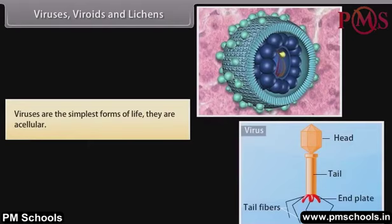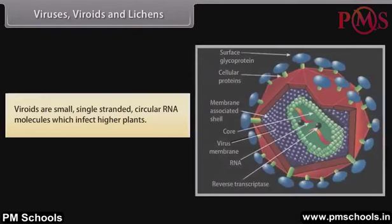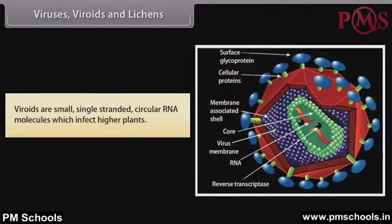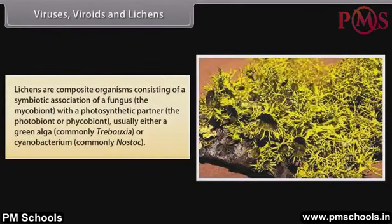Viruses are the simplest forms of life. Viroids are small single-stranded circular RNA molecules which infect higher plants. Lichens are composite organisms consisting of a symbiotic association of a fungus — the mycobiont — with a photosynthetic partner, the photobiont or phycobiont, usually either a green algae, commonly Trebouxia, or a cyanobacterium, commonly Nostoc.